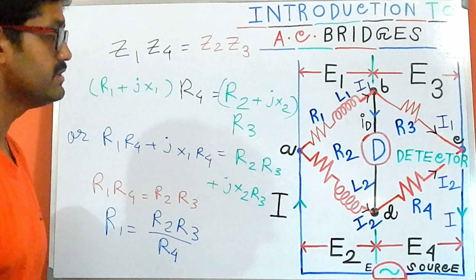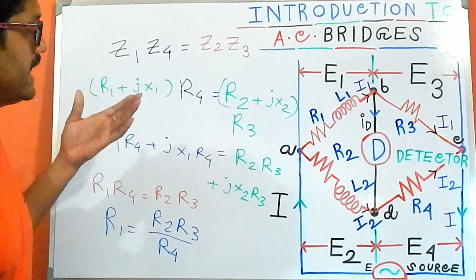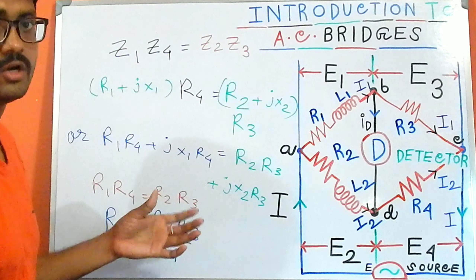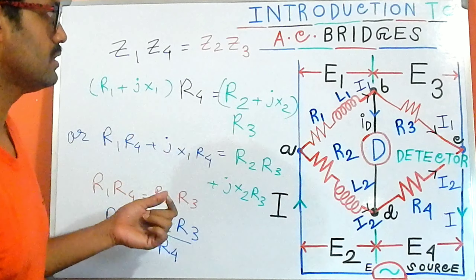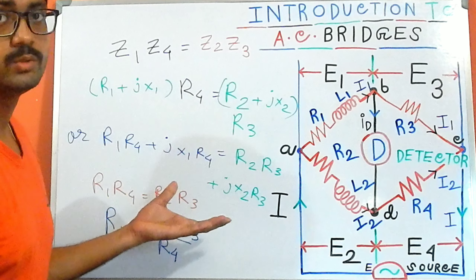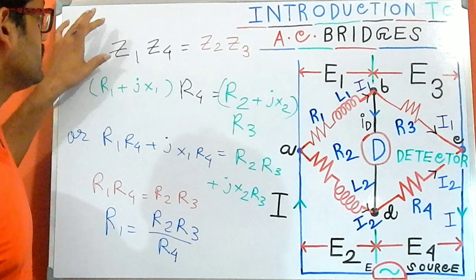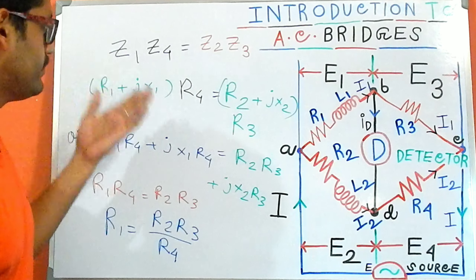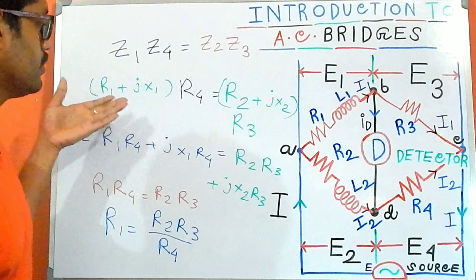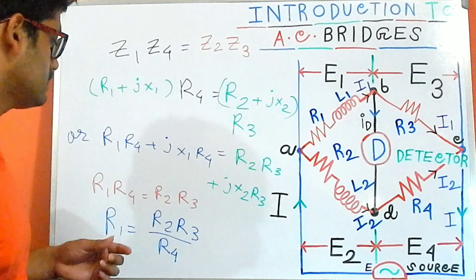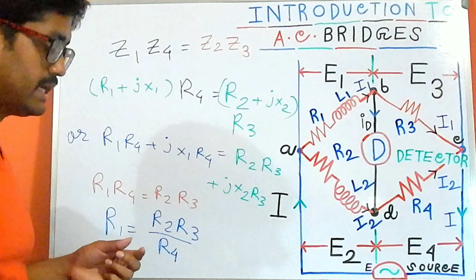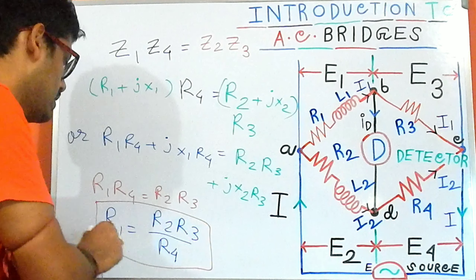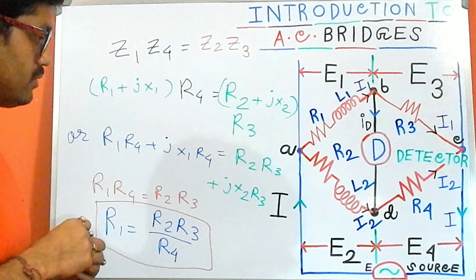In order to refresh your mind: I have taken a bridge circuit here and I need to find out how to solve this bridge circuit. I have written the balanced equation and put in the values of each impedance. I equated the real part and got the expression for R1.